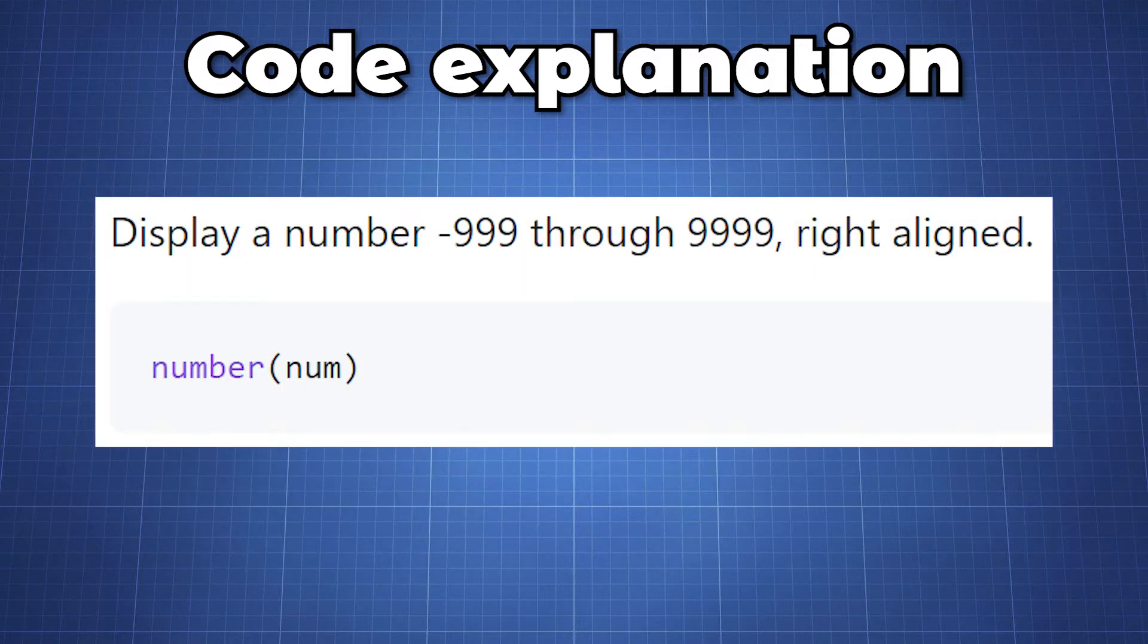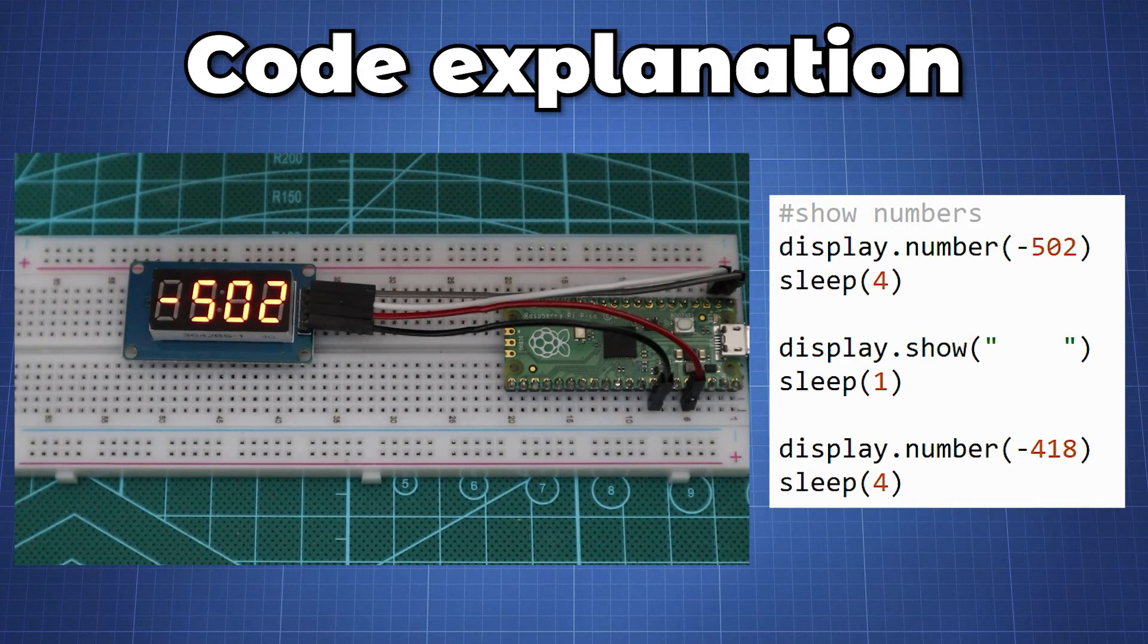The next method is number which allows us to display a number from negative 999 through 9999 which will be right aligned. Here we use the number method to display negative 502 for four seconds and clear the screen for one second, and then we display 418 for four seconds.